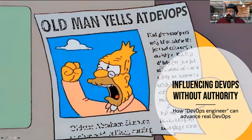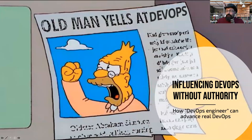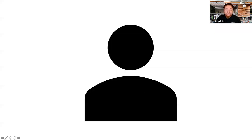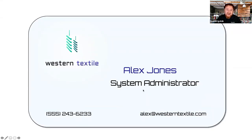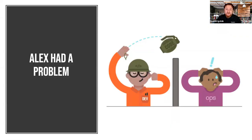I have a co-host here with me, Leonid Golnick. Good morning, good afternoon everybody. With Leonid, we're going to discuss today how to influence DevOps without authority — hopefully in ways more successful than yelling at DevOps. We're going to take you on this mythical journey together with our friend Alex, a system administrator at a company that is not exactly a software company, Western Textile. Like a typical old-school company, they're facing typical problems — the software gets tossed over the wall and the development team leaves them to fend for themselves.